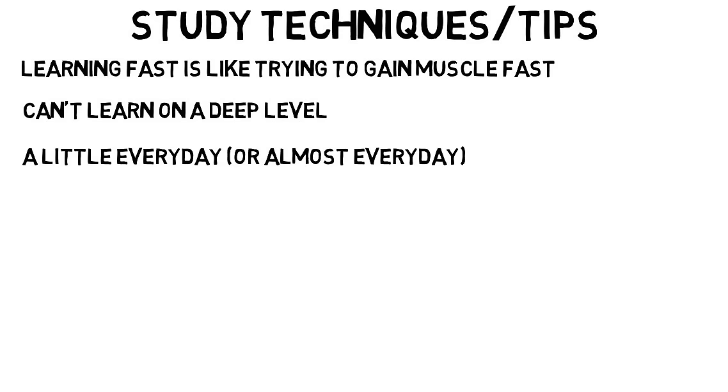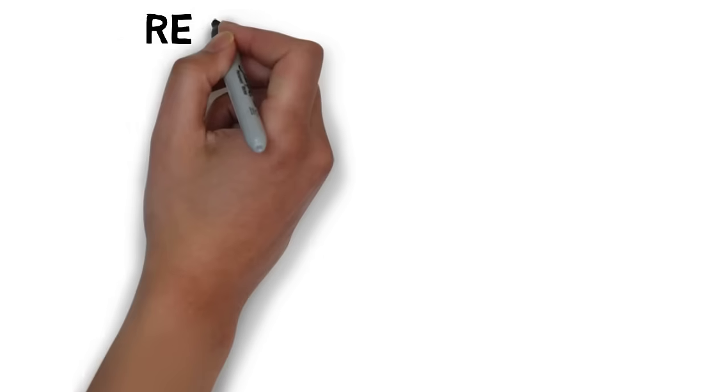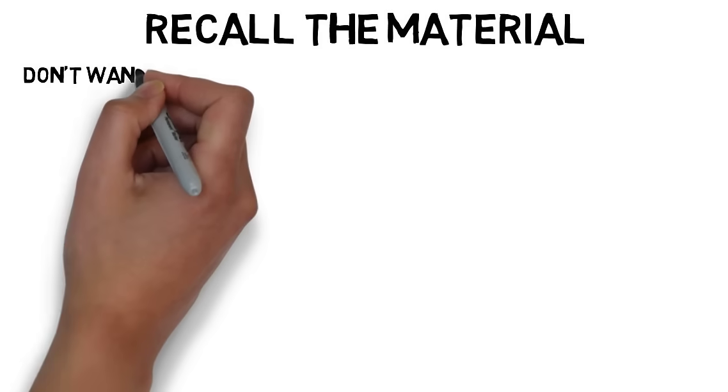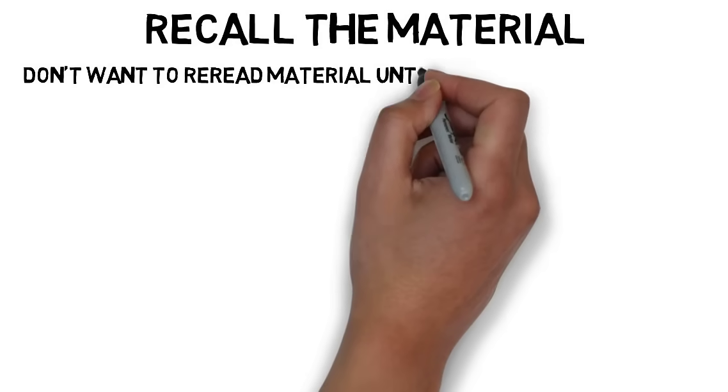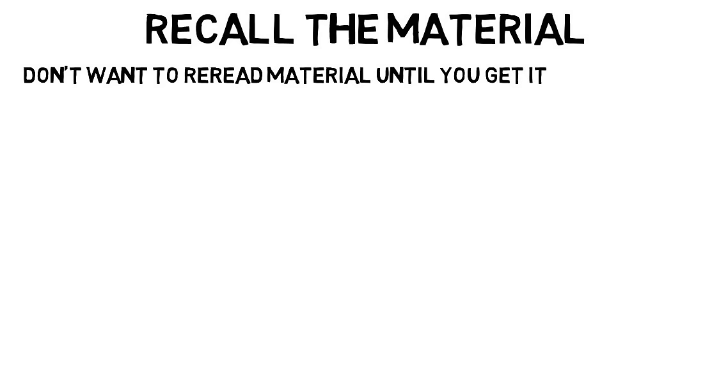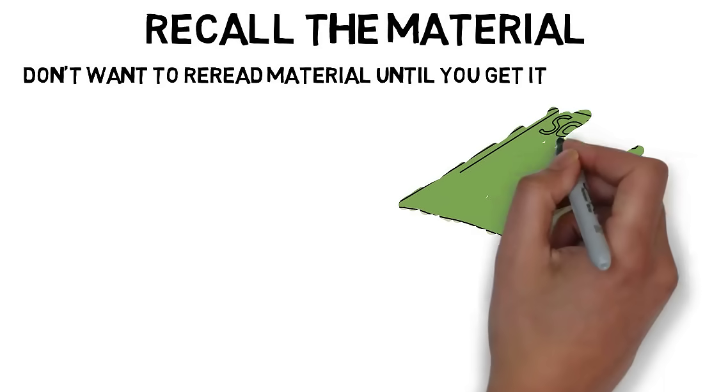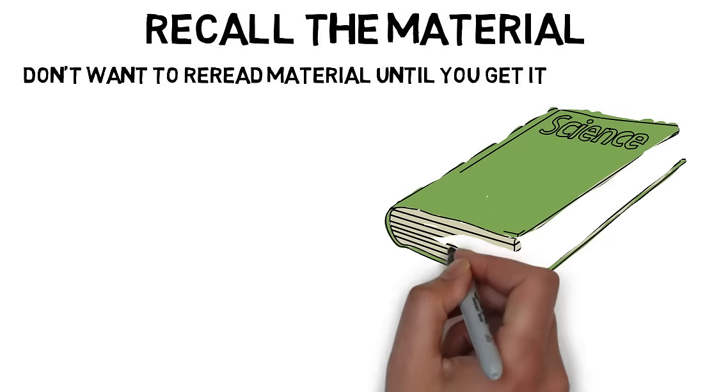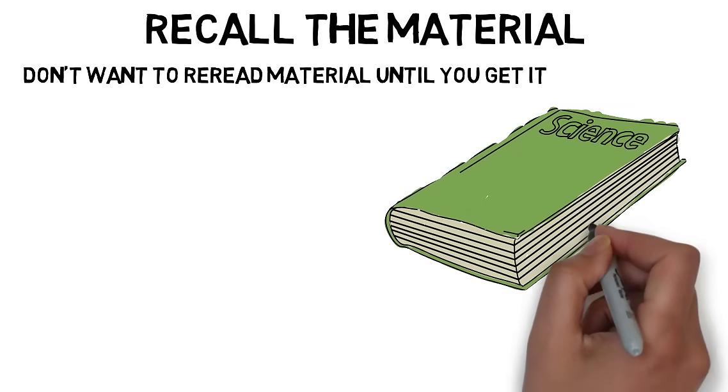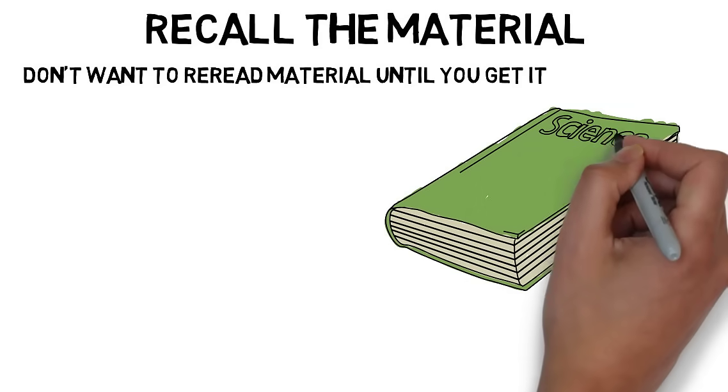Now the best study method they found for any topic is attempting to recall the material that you have just learned. What you don't want to do is reread material until you get it. This is one of the worst ways to memorize or learn new material. What you want to do is read something new, then turn away or close the book, and try to recall what you just read as much as possible.